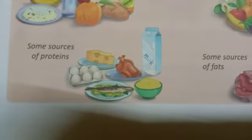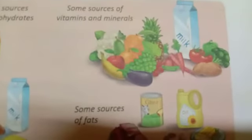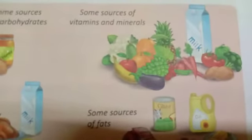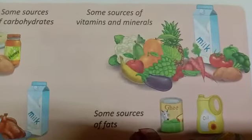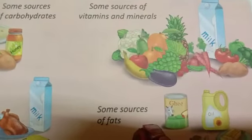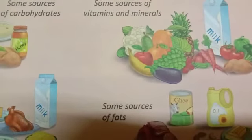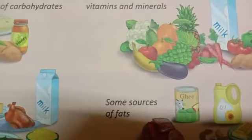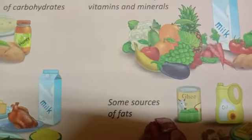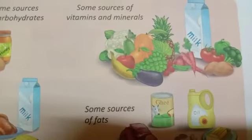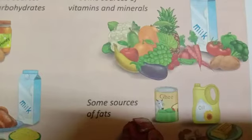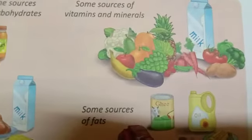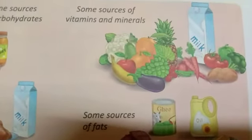Lastly, vitamins and minerals. You can see here the sources of vitamins and minerals. Vitamins and minerals contain calcium, iodine, phosphorus, and other important minerals required by our body. They are needed in small amounts for normal functioning of the body, and they help to fight disease and prevent us from falling sick.